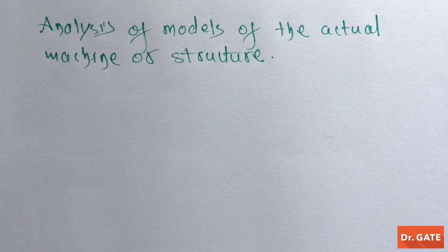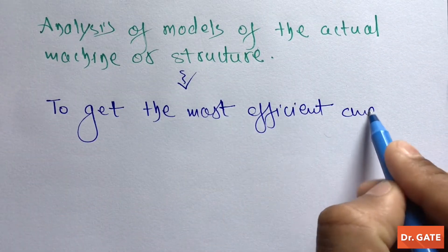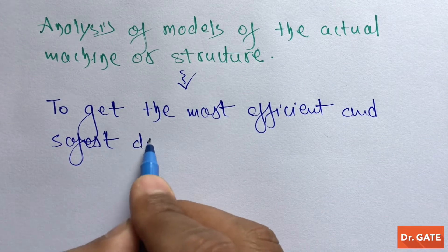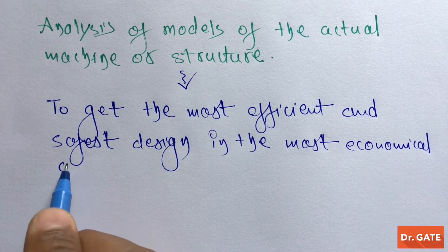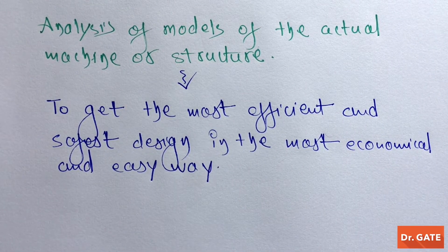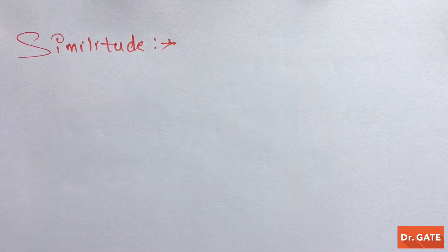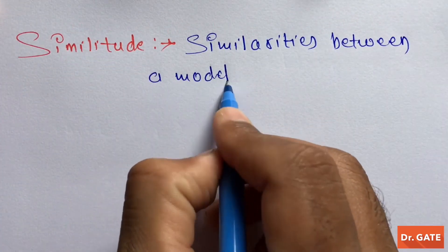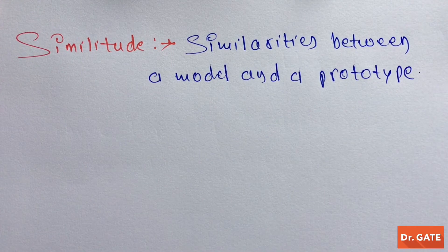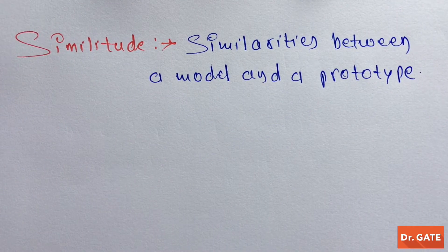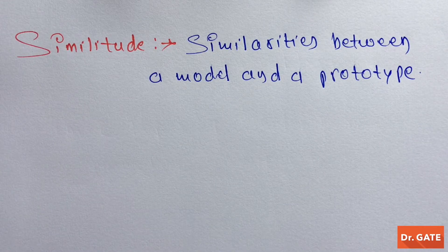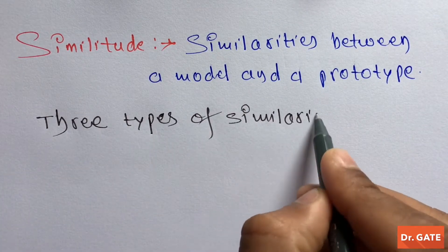Why do we perform model analysis? To get the most efficient and the safest design in the most economical and easy way. And what is similitude? Similarities between a model and a prototype is known as similitude. A model is said to have similitude with its prototype when they have the following three types of similarities.